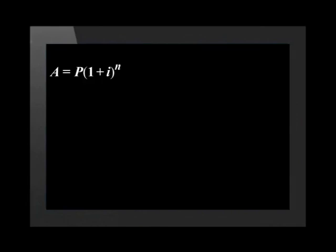Now let's calculate the cost of a new bus in 9 years' time when the school needs it. We are going to use the compound appreciation formula that reads: A equals P bracket 1 plus i bracket to the power of n.